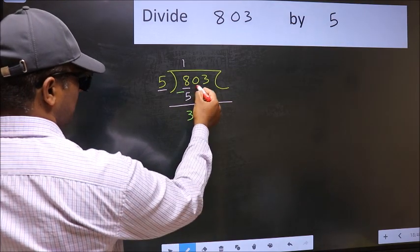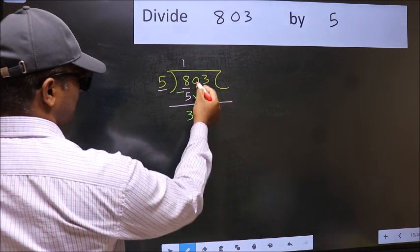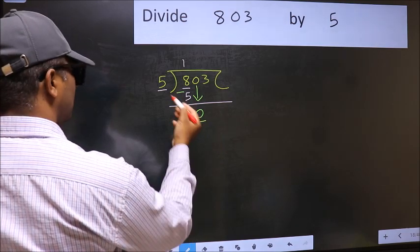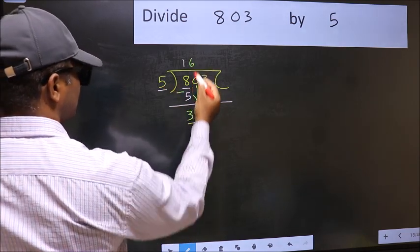After this, bring down the beside number. So, 0 down. Now 30. When do we get 30 in 5 table? 5, 6, 30.